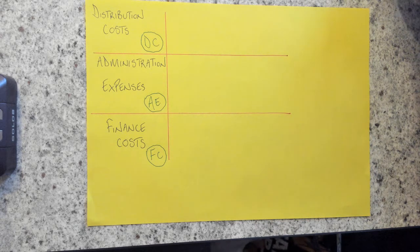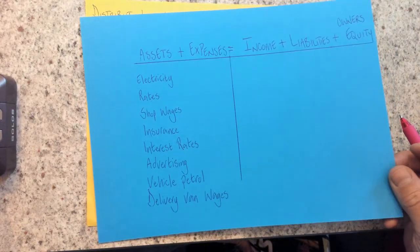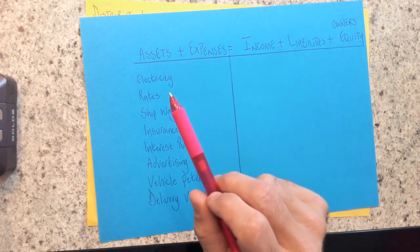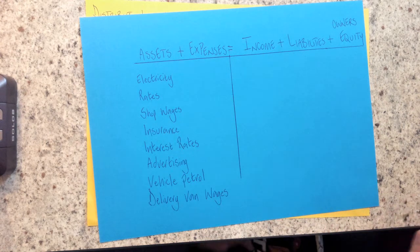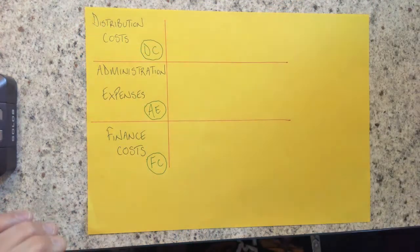So typically on a trial balance, we might see a list of expenses like so. And then we've got a formula at the top here. So there's a couple of tricks that we can use to help us classify all of these different types of expenses. And to do that, we're going to split it like so.